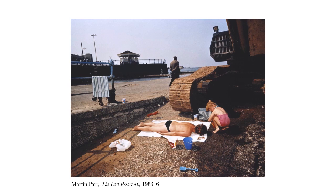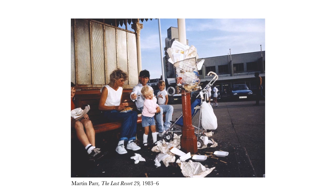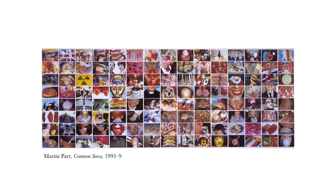Martin Parr captured British modern life and used photography to explore the social classes of England. He worked with saturated color and flash, very different from traditional documentary photographers, and used humor as a key strategy — playing with the satirical and looking at modern subjects through an anthropological lens. People on the beach, trash on holidays — he captured the discrepancies of wealth and social class, the mundane and everyday, but pushing it further.